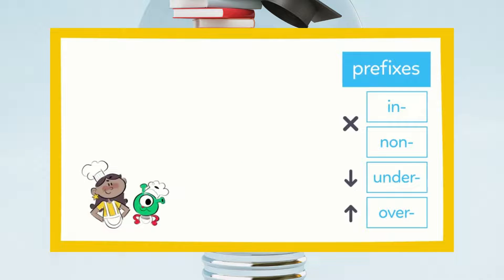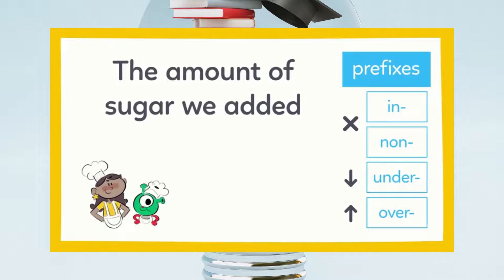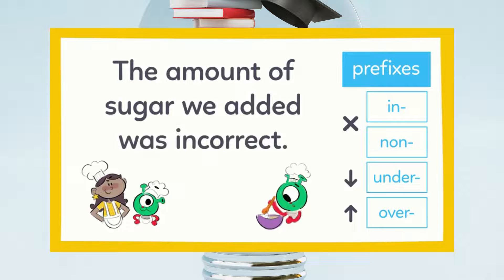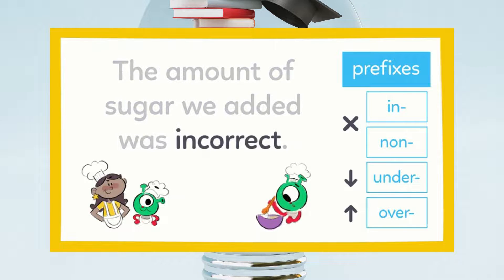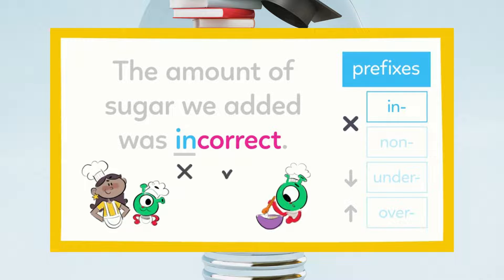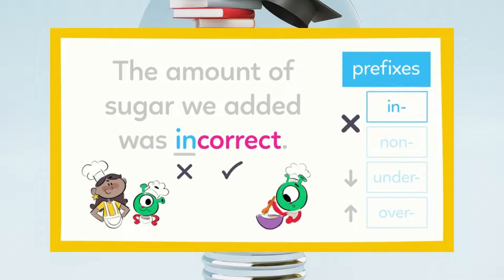We decided to make our own cookies. The amount of sugar we added was incorrect. To guess the meaning of incorrect, look at its prefix, in, and its base word, correct. Incorrect means not correct, because the prefix in means not.